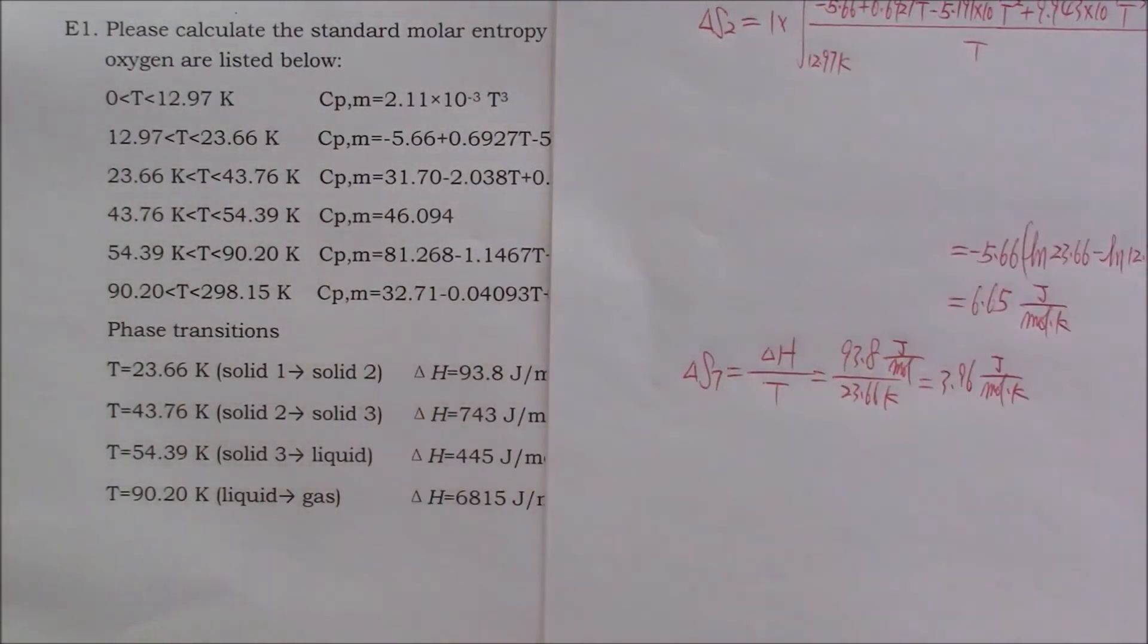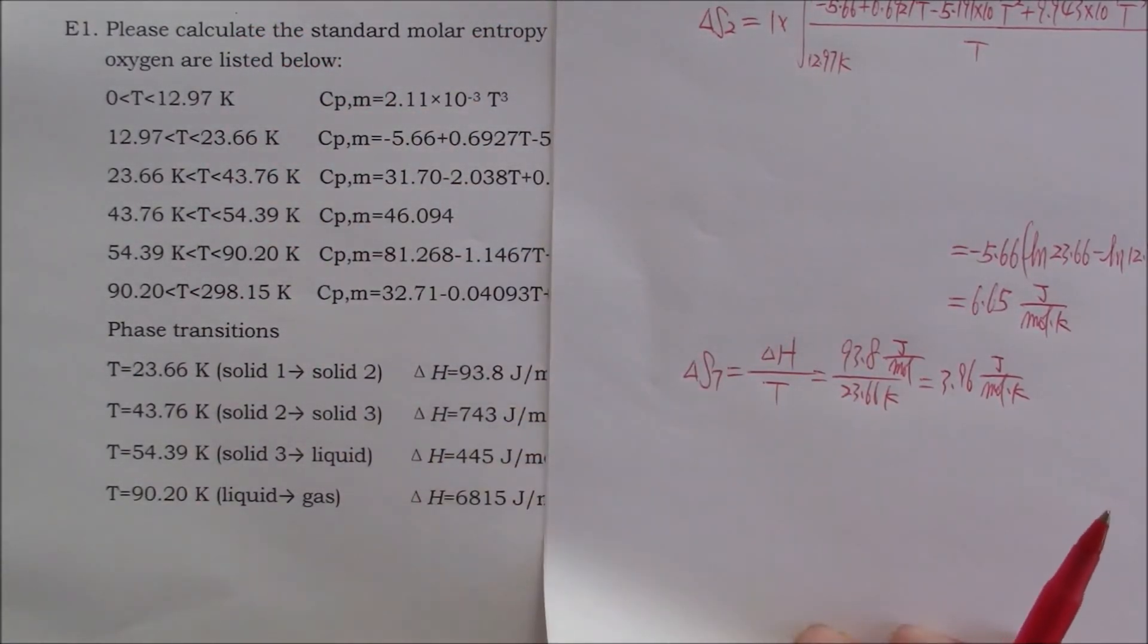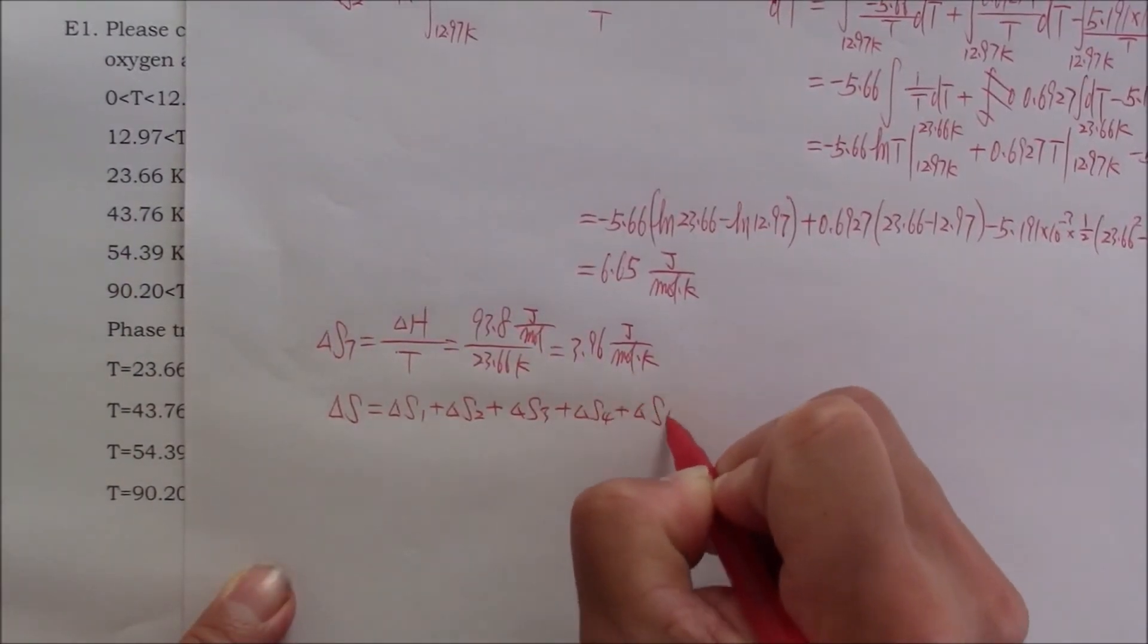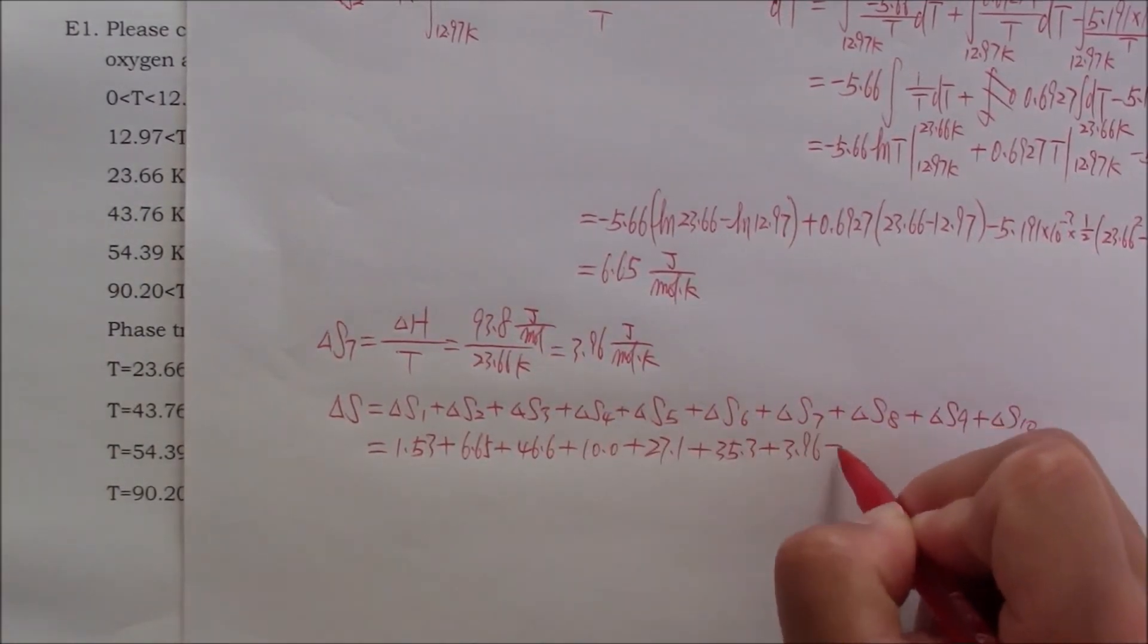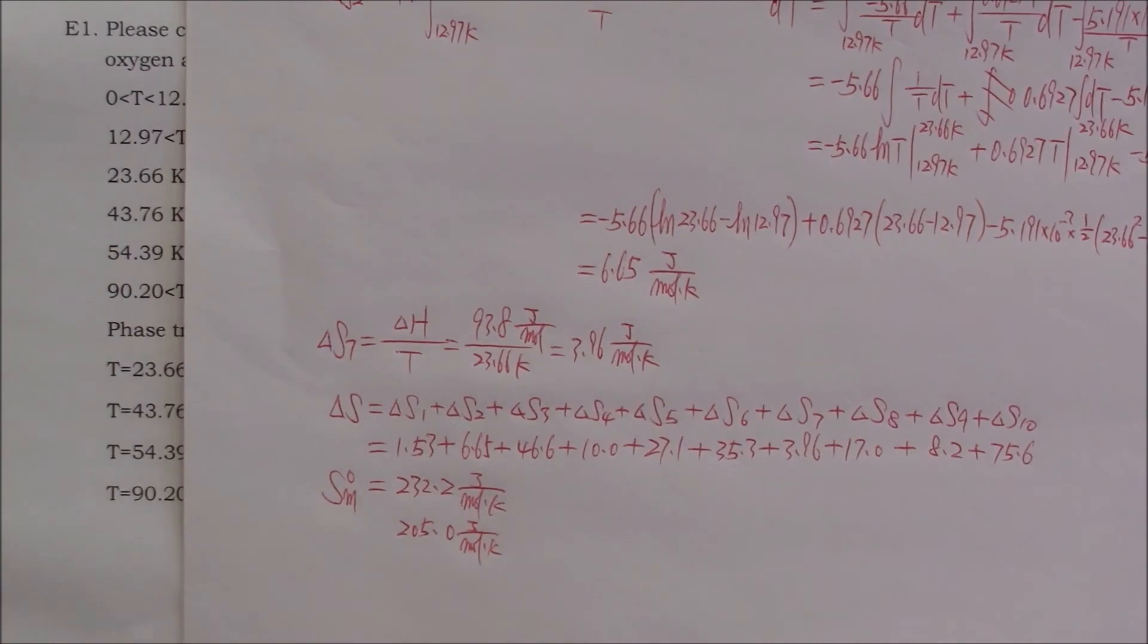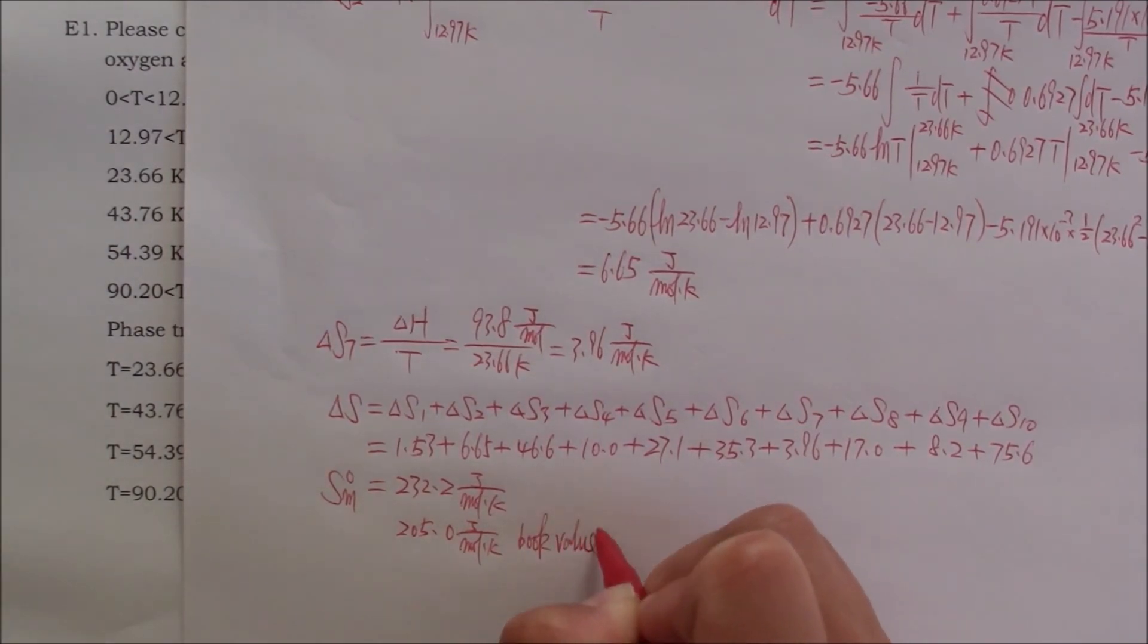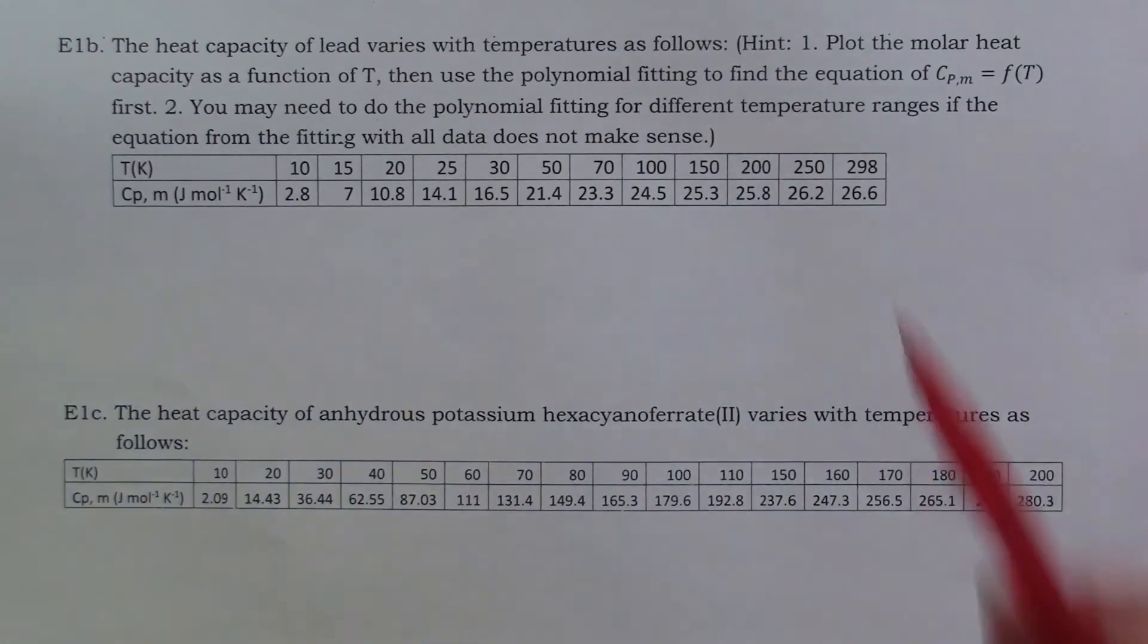If you follow these two methods, you can calculate the delta S for all of them. Then, at the end, we need to add all of them together. This will be the standard molar entropy of oxygen at 298 Kelvin. If you look up the book, the value in the book is 205.0 joule per mole per Kelvin. Compare these two numbers. Our result is not that bad, right? Can you follow my example to finish these two problems by yourself? Make sure to look at the hints first.